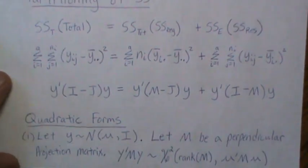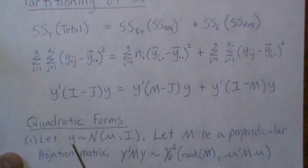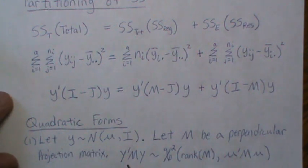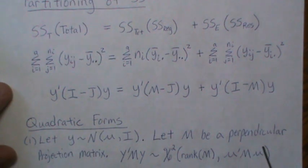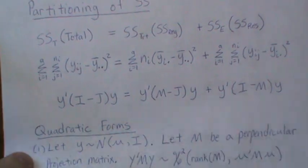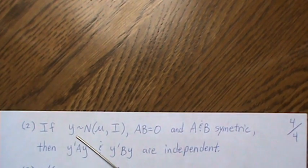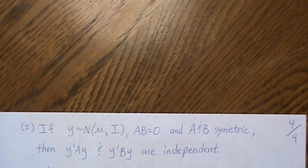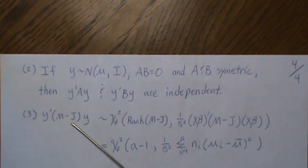Now for quadratic form results: if Y is a multivariate normal random vector with mean μ and M is an orthogonal projection matrix, then Y'MY is non-central chi-squared with degrees of freedom equal to rank(M) and non-centrality parameter μ'Mμ. Furthermore, if Y is multivariate normal and A·B = 0 with A and B symmetric, then the two quadratic forms Y'AY and Y'BY are independent.